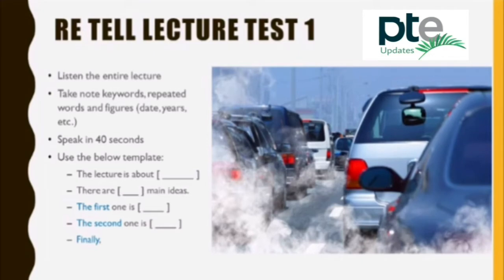By the 1950s, air pollution was very visible with frequent thick black fogs known as smogs in many large cities around the world. The main source of this pollution was from factories and it caused severe health problems. For example, a particularly severe smog in London in 1952 caused over 4,000 deaths.